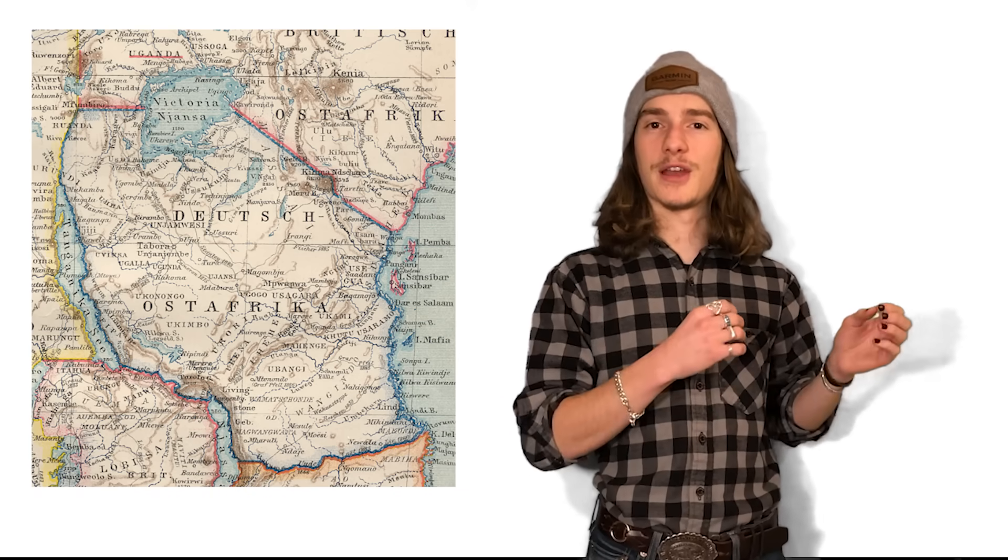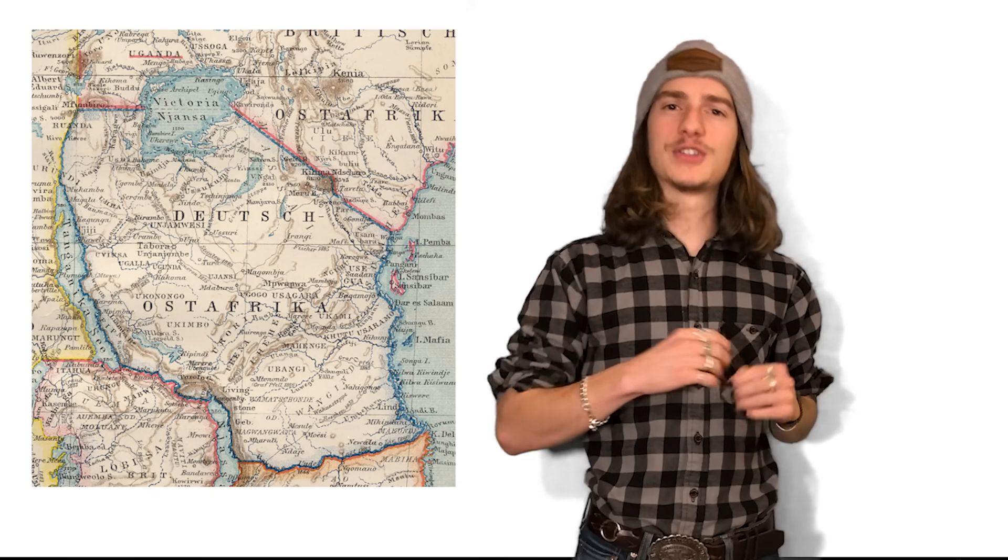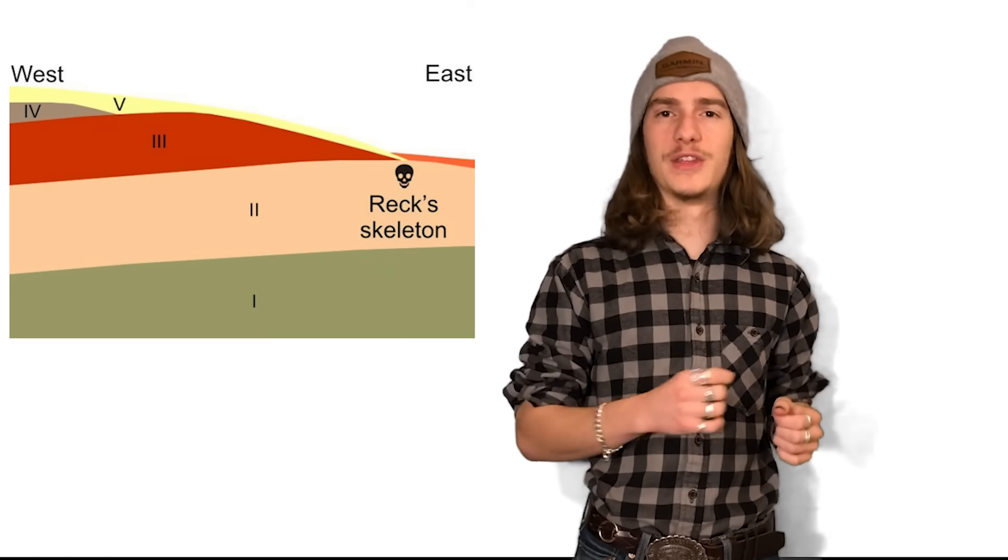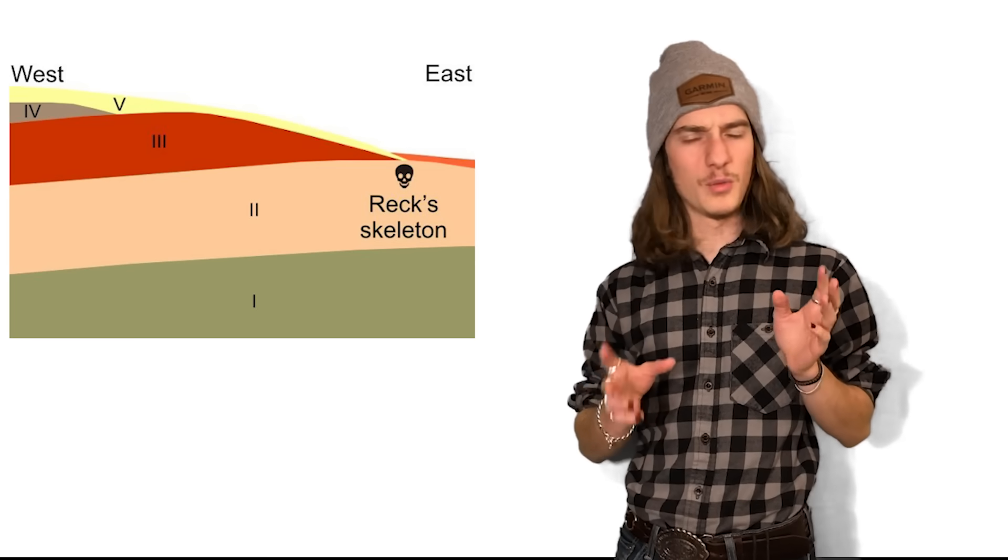The year is 1913, and German paleontologist and professor Hans Reck is conducting a dig in what was then known as Deutsch Ostafrika, or German East Africa, for those of you who speak American. While Reck was initially there to look for dinosaur bones, he was directed to the remains of a human that was found in Bed 2 of the Olduvai Gorge. And while hominid remains would become common at the site, this one was unusual.